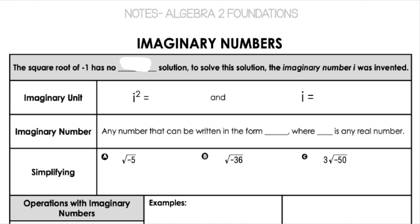So why do we need imaginary numbers? Because the square root of negative 1 has no real roots, no real solutions. So to figure out how we can still solve problems with negative square roots, we have this imaginary number so that we can solve the problem of what do we do with the square root of a negative number. So an imaginary unit is where we have the square root of negative 1, which means that i squared is equal to negative 1, and i is the square root of negative 1. We use i to represent the square root of negative 1 and show that it's an imaginary solution.